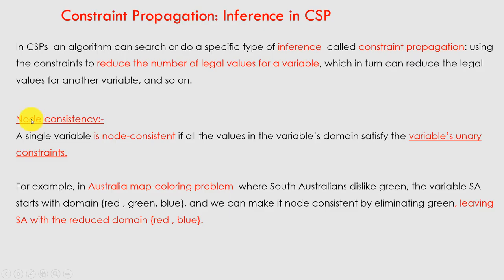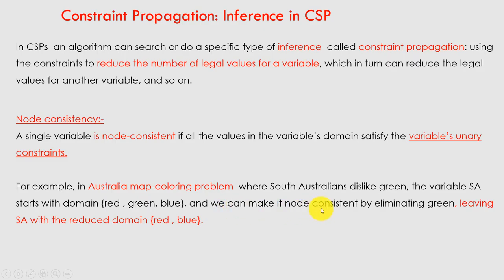From this we can talk about node consistency. A single variable is node consistent if all the values in the variable's domain satisfy the variable's unary constraint — meaning a single constraint applies to a single variable. For example, in the Australia map coloring problem, if South Australia dislikes green, the variable starts with domain {red, green, blue} and we make it node consistent by eliminating green, leaving South Australia with the reduced domain {red, blue}.